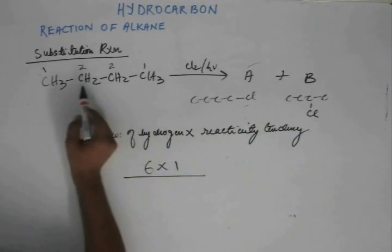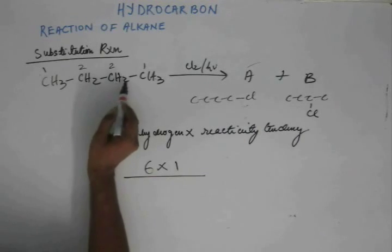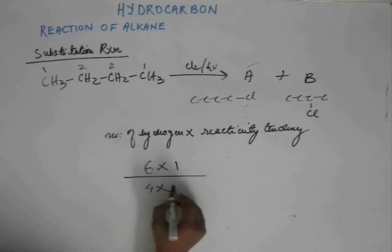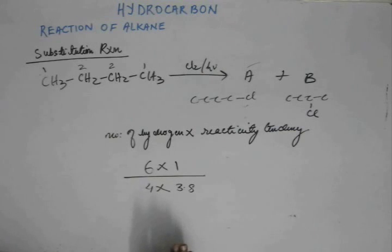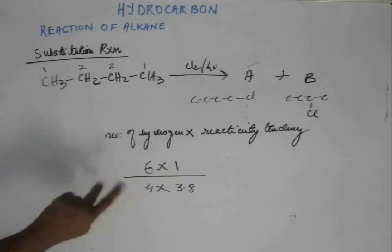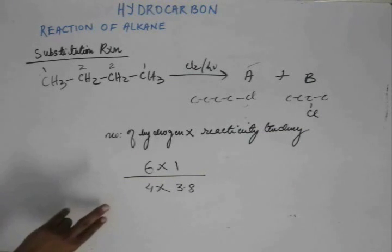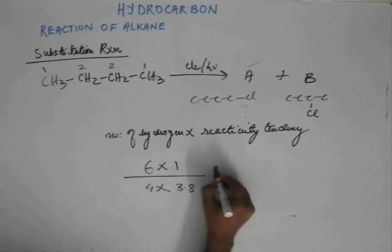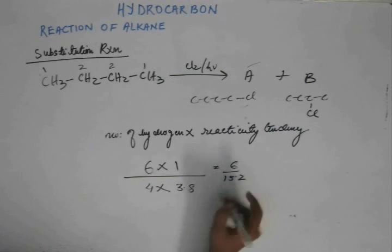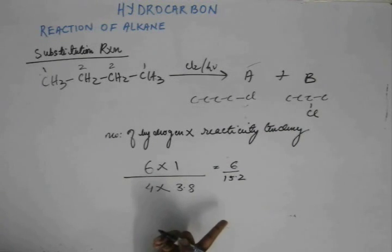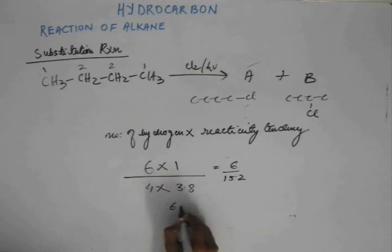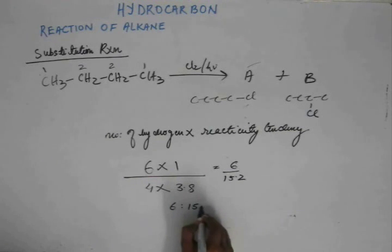Now if you have to get to the product B, then there are two sites and correspondingly four hydrogen. So number of hydrogen is four and tendency here because it is two degree is 3.8 based upon the previously given data. So these are the ratio of the reactivity rate for these two sites. And that reactivity rate will give us the corresponding ratio of the product. So this comes out as 6 by 15.2, so A is to B are present in the ratio of 6 is to 15.2.